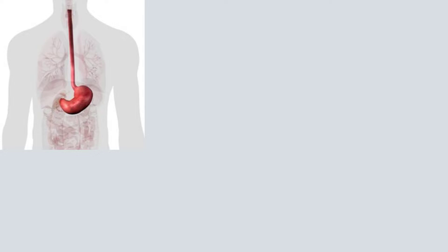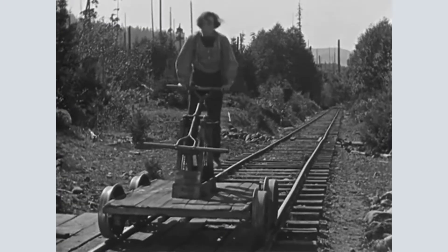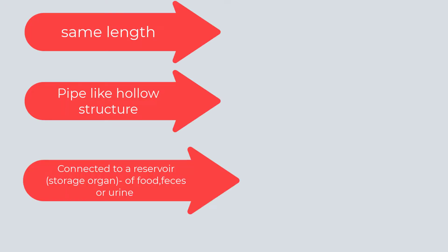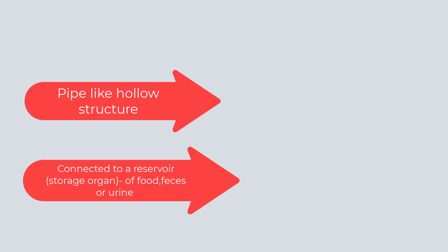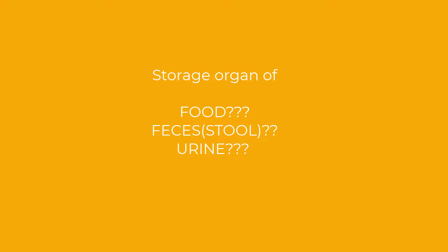The human body is like a machine with organs through which food, feces, and urine travel. The organs I'm going to talk about have three common similarities: first, they are equivalent in length; second, they have pipeline structures; and third, all of them are connected to a reservoir or storage organ — either for food, stool, or urine. Can you name the storage organs for food, stool, and urine?